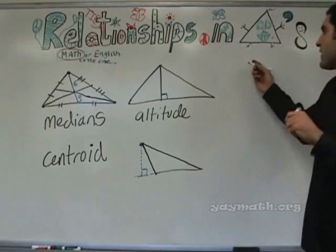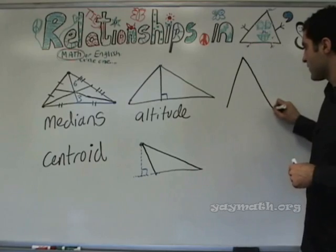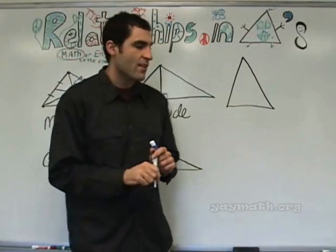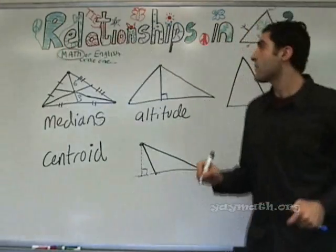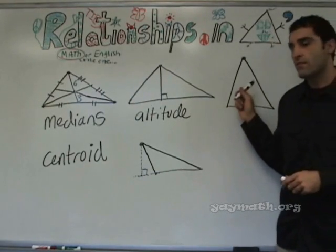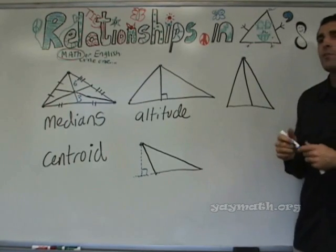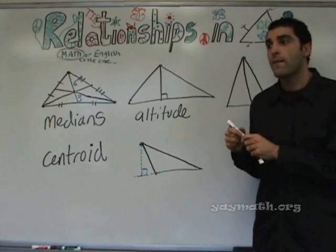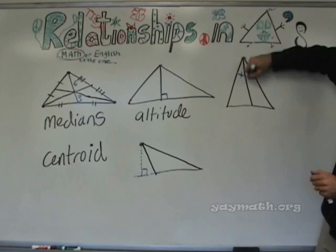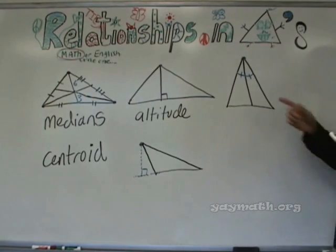We've done this one. Let's do something like this. Angle bisector. What do you think an angle bisector does if we start here? It bisects the angle, right? If it bisects the angle, what's the marking on the triangle going to be? You do the circle thing at the top and then a slash. Angle bisectors — there they are.